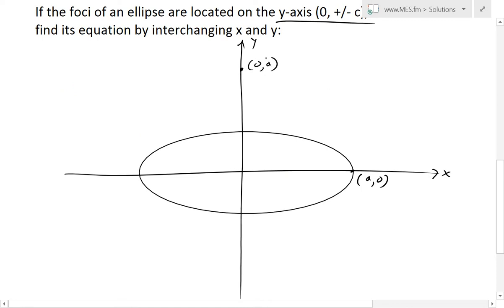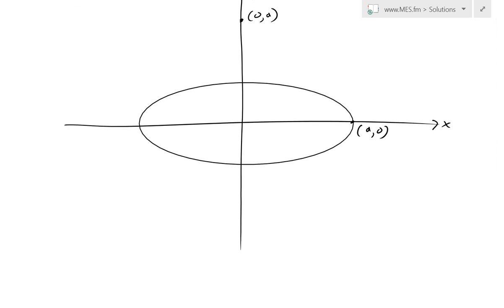So basically, it would interchange each one, and at this point right here, this is at negative a and 0, so we would interchange it to here, which is 0 and negative a.